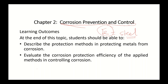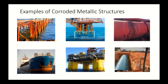At the end of this topic, you should be able to describe the protection methods in protecting metals from corrosion, and you should be able to evaluate the corrosion protection efficiency of the applied method in controlling corrosion. Steel is cheap and abundantly available, but the problem with steel is it is easily corroded when exposed to solution containing dissolved oxygen or in aggressive solution. These are examples of corroded metallic structures — most structures in building construction use steel, besides aluminum.